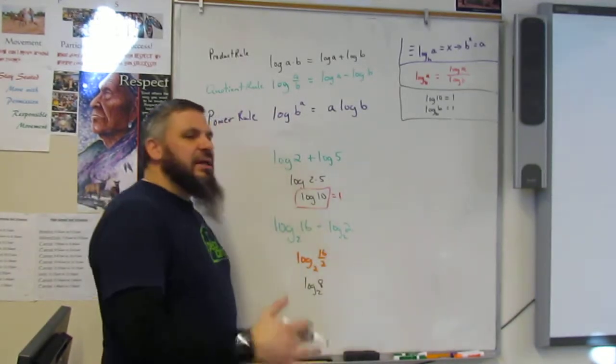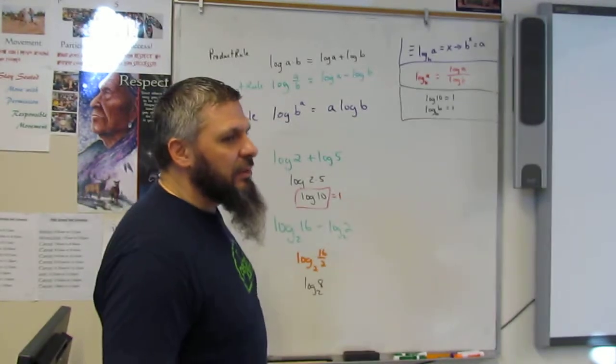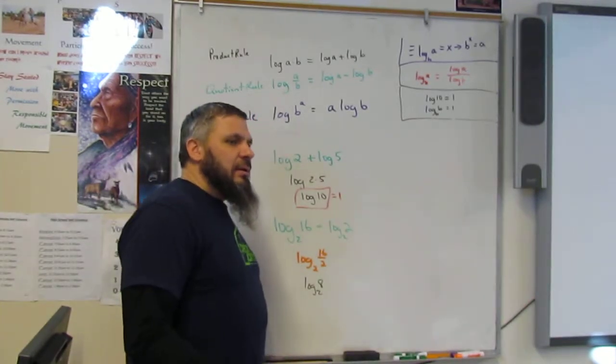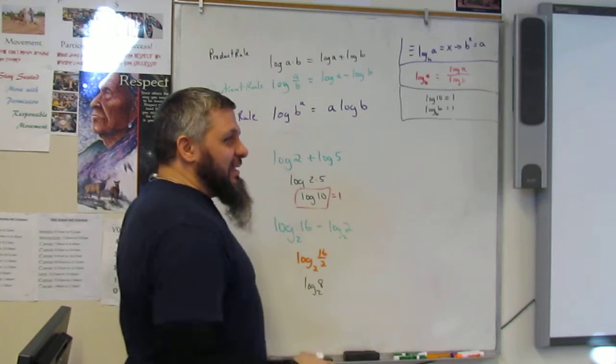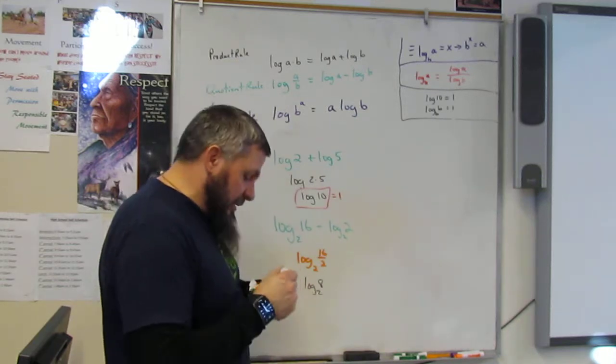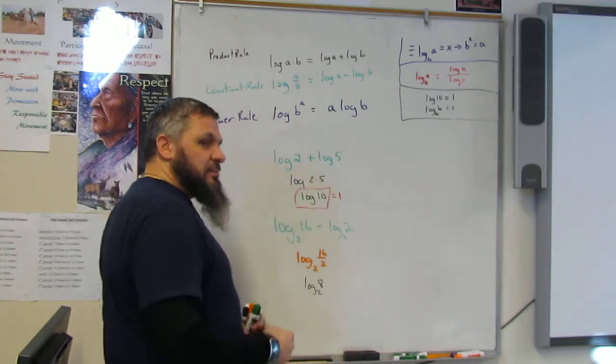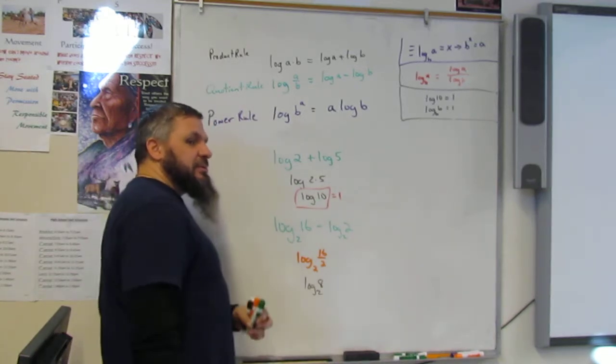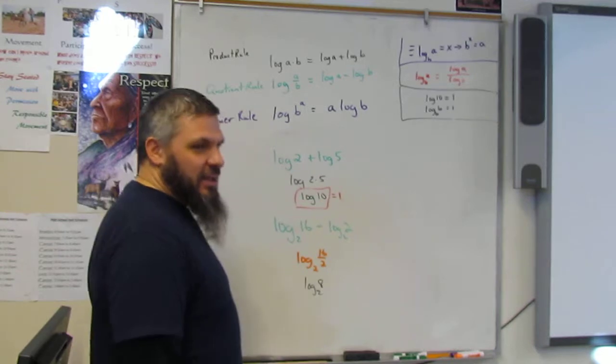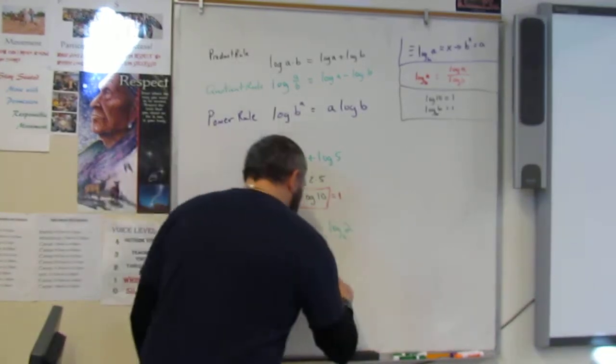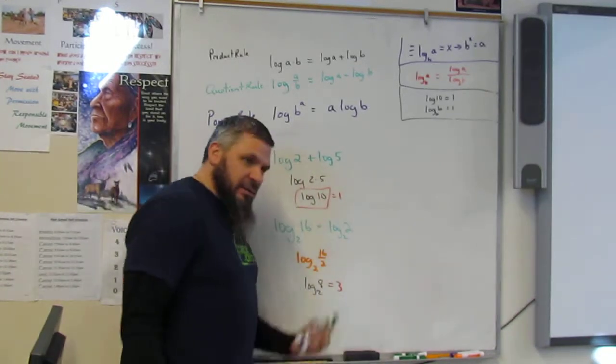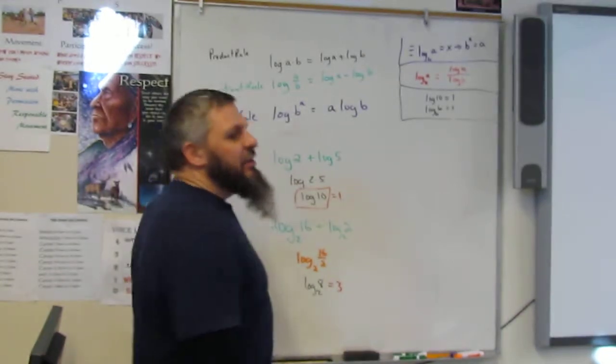Now how are we going to do that in a calculator? This one's actually easier to do in your head, if you think about it. Let's go back to the red color. 2 to what power is 8? 2 times 2 is—3. Oh, 4. Sorry. 3. Yes. So this is actually equal to 3. Yeah.